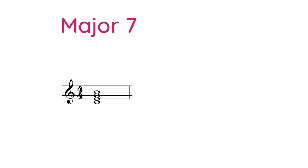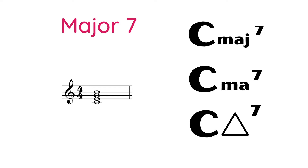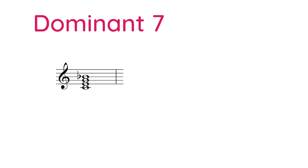C major seven can be written a few ways: Cmaj7, Cma7, or C-triangle-7. The triangle is shorthand and old school, but if people are handwriting charts, they often use this triangle. Next is the dominant seventh.